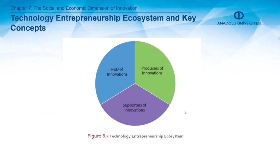Our third subsection is about the technology entrepreneurship ecosystem and its key concepts. The technology entrepreneurship ecosystem is formed by the combination of three different areas: research and development of innovations, producers of innovations, and supporters of innovations. When these three parts come together, they constitute the technology entrepreneurship ecosystem.